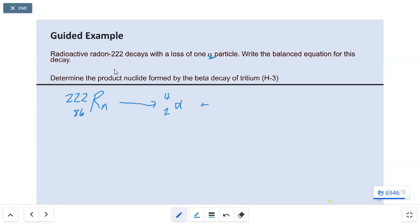So if the total needs to be 222, I've already got 4. 222 minus 4 gives me a mass number of 218. Total has to be 86, I already have 2. 86 minus 2 is 84. I look to the periodic table. Periodic table tells me that element number 84 is polonium. So that's the first example.